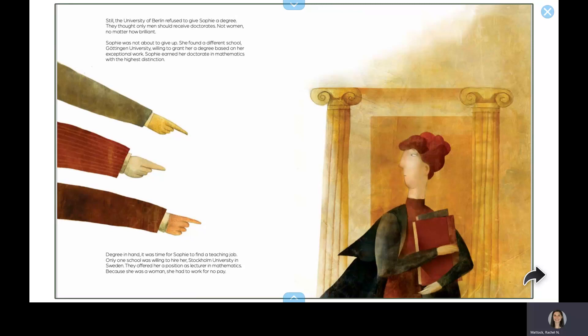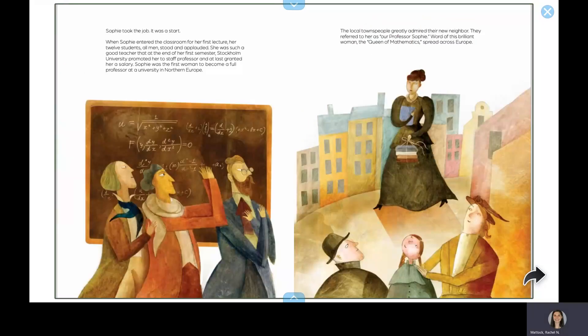Degree in hand, it was time for Sophie to find a teaching job. Only one school was willing to hire her, Stockholm University in Sweden. They offered her a position as lecturer in mathematics. Because she was a woman, she had to work for no pay. Sophie took the job. It was a start.